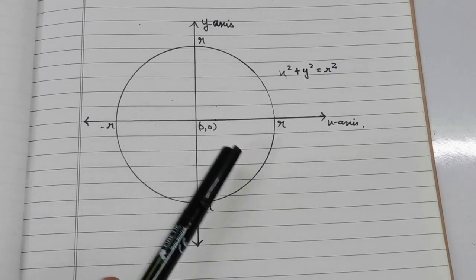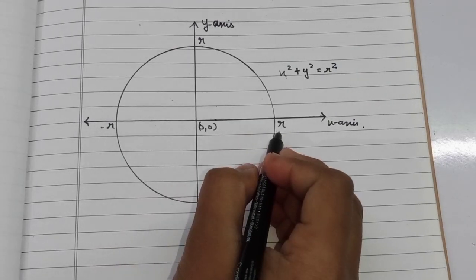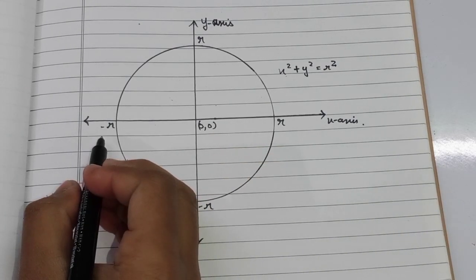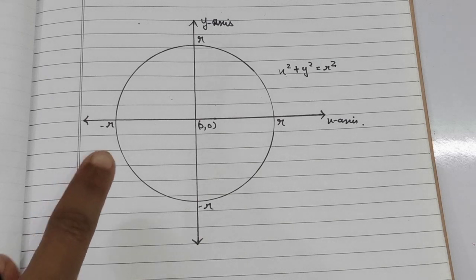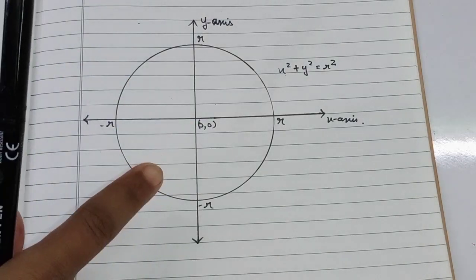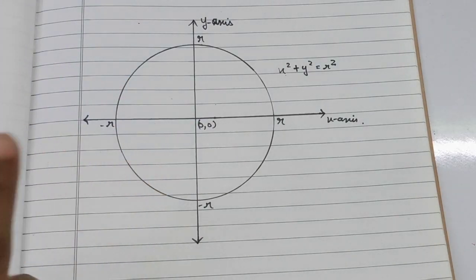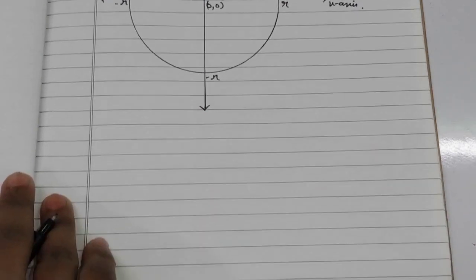On the graph, we have r and negative r marked. Now, for finding the volume of a sphere, let's make a revolution of this circle along the x-axis. The formula will then be...